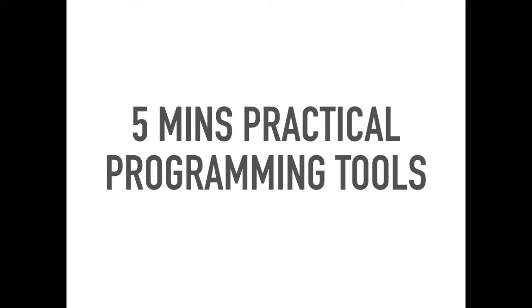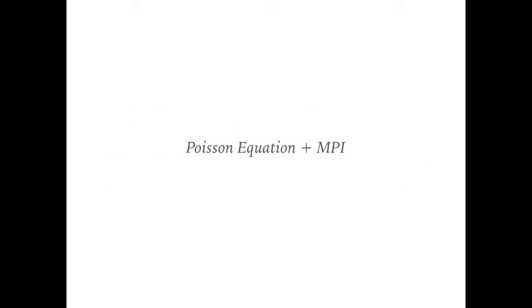In previous videos, we discussed details about how to use MPI to create the mesh grid for parallel programs. For this video, we start to solve a real problem. Our goal is to use MPI to solve the Poisson equation.